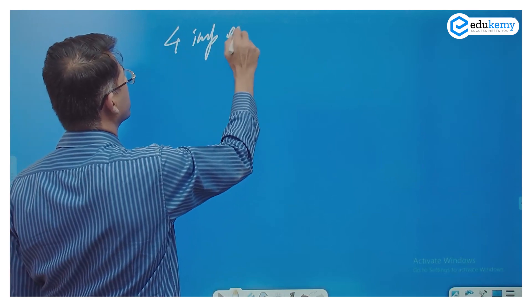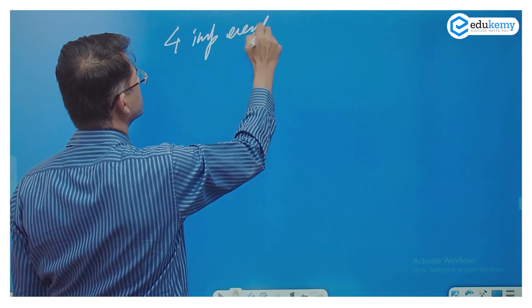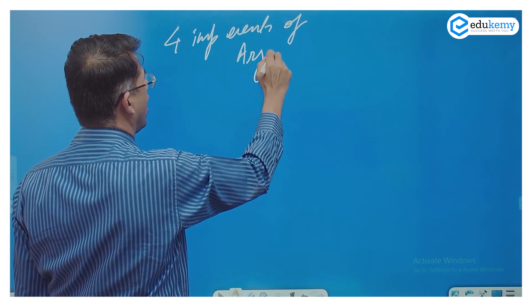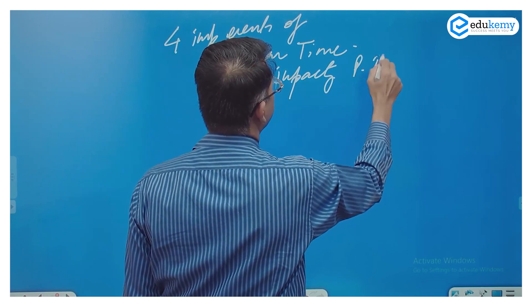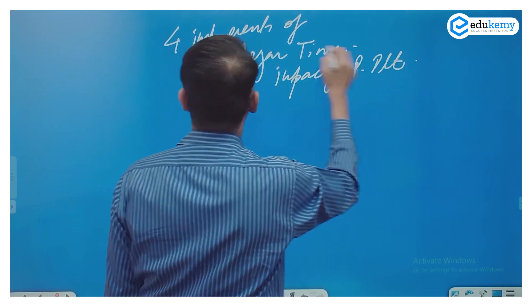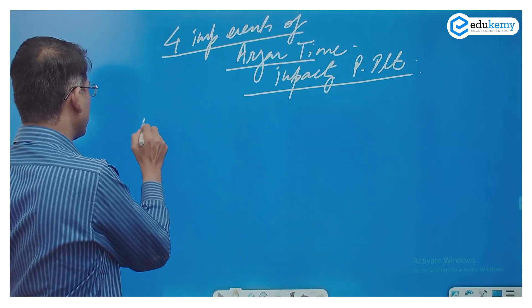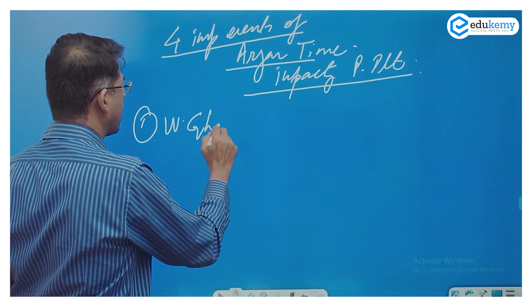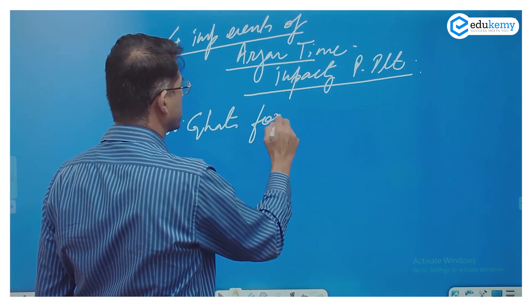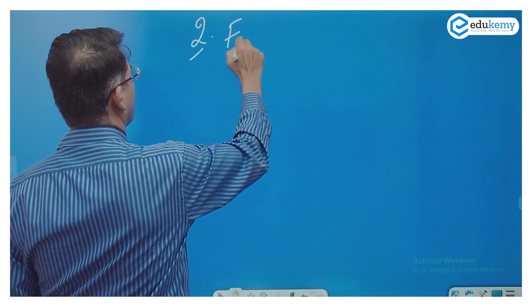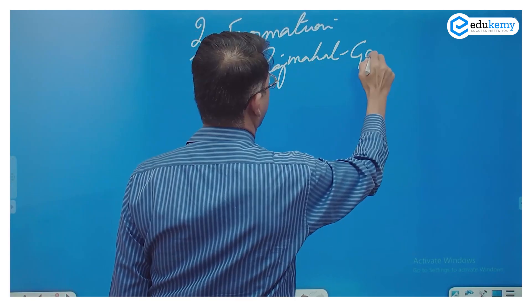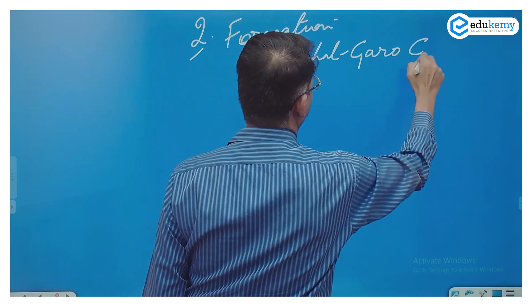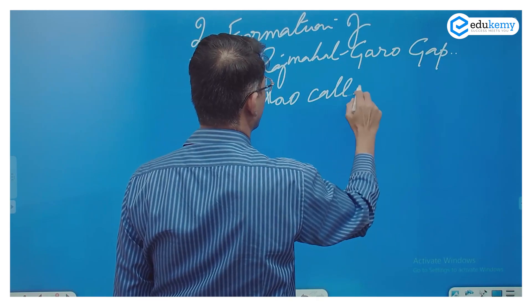There are four important events of Aryan times impacting the peninsular plateau. Number one was the Western Ghats formation. The second was the formation of the Rajmahal-Garo Gap, also called the Malda Gap.